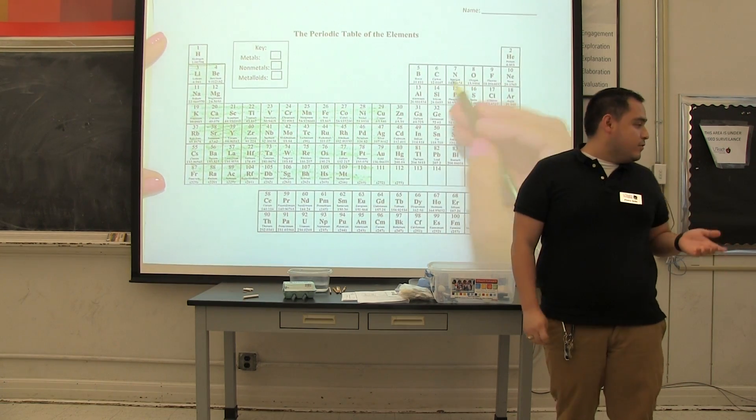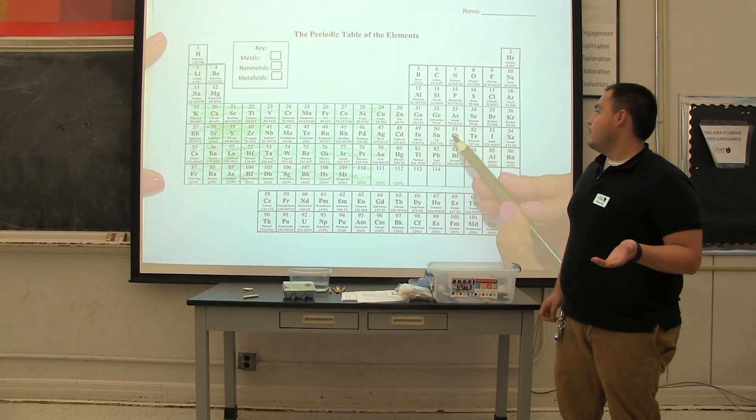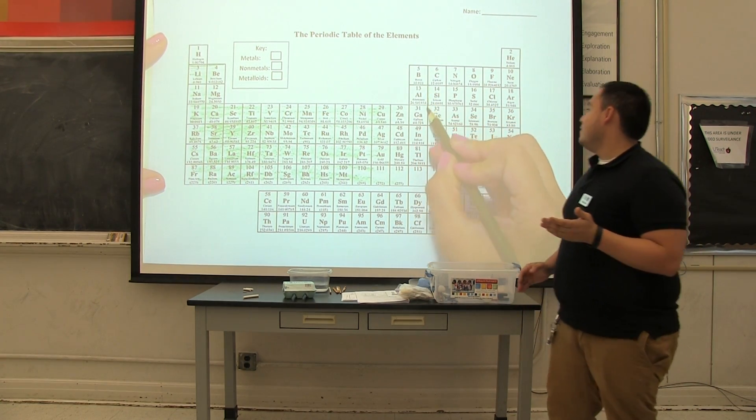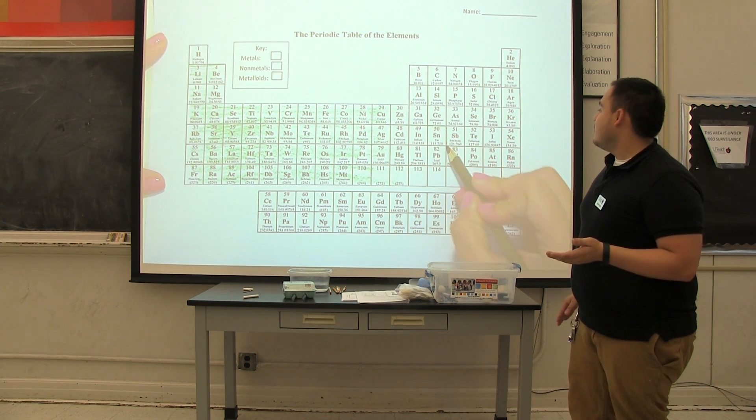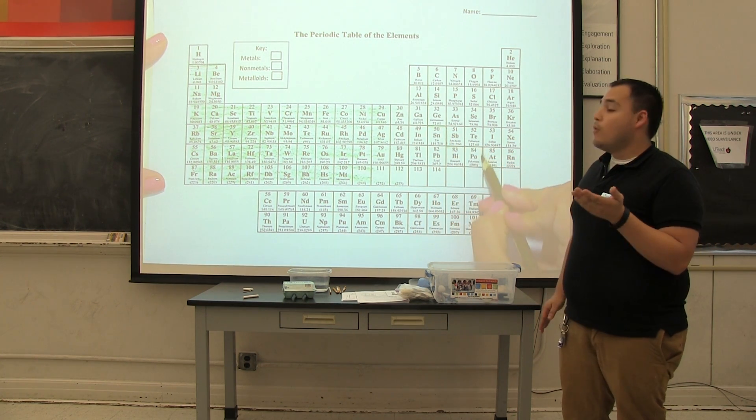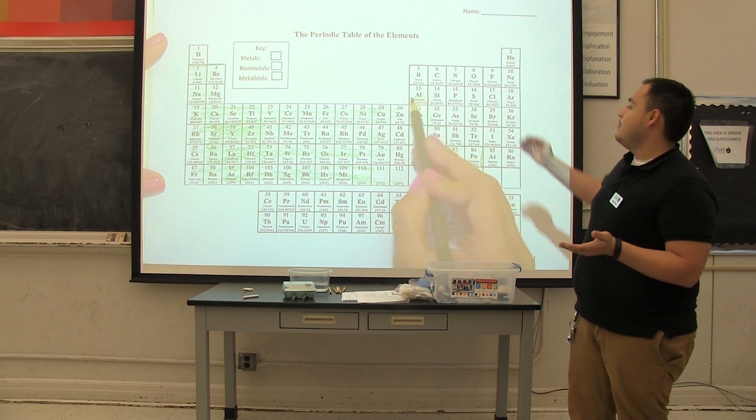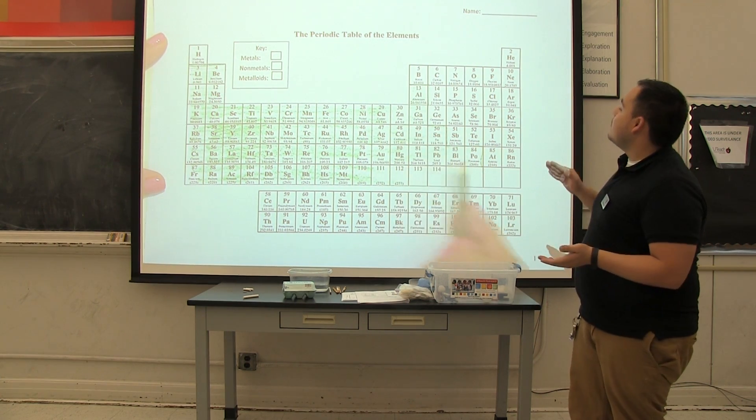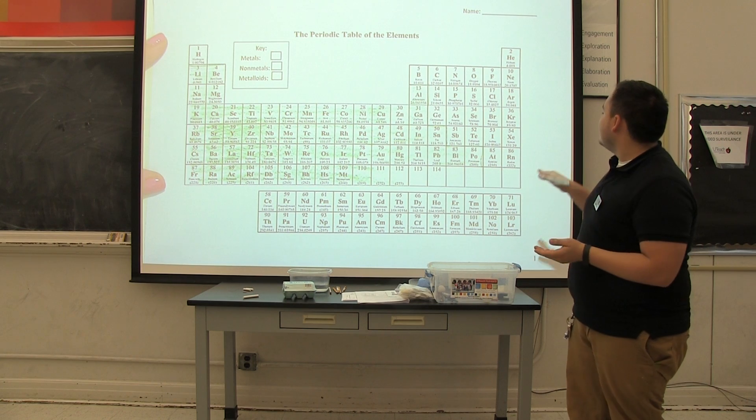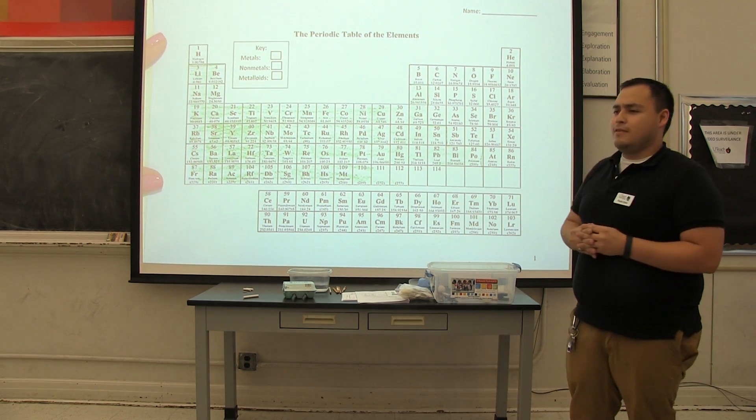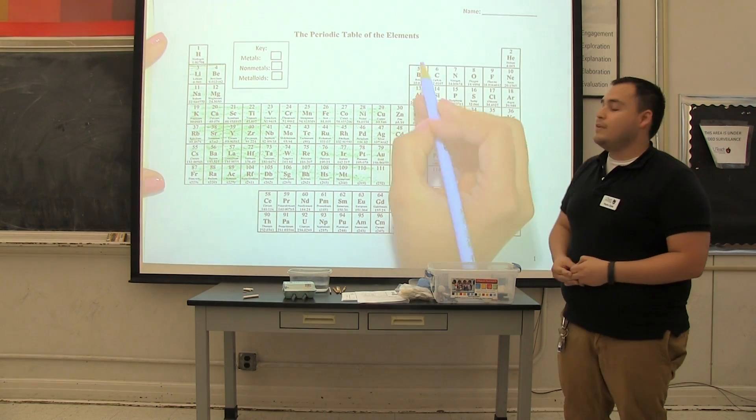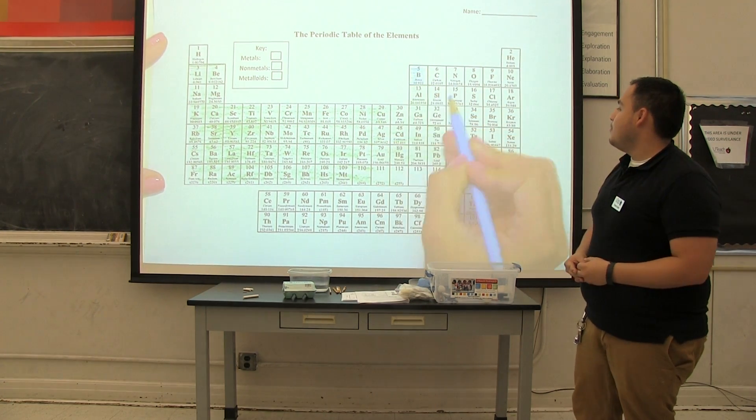All right, now we're going to choose blue for our metalloids. Our metalloids are actually in a weird shape. They go like an escalator. So it starts from boron, the letter B as we see there. So we're going to color boron down, all the way down to Rn and At. Remember, we said blue for metalloids in our purposes.